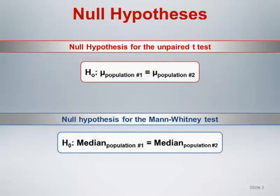Comparing the null hypothesis for the unpaired t-test with that of the Mann-Whitney test, we see that instead of focusing on the difference in the population means, the null specifies equality of the medians of the two populations under study. This is a natural result of focusing on ranks, which measure relative position or ordering of the data, rather than measuring the actual magnitude of the data values themselves.